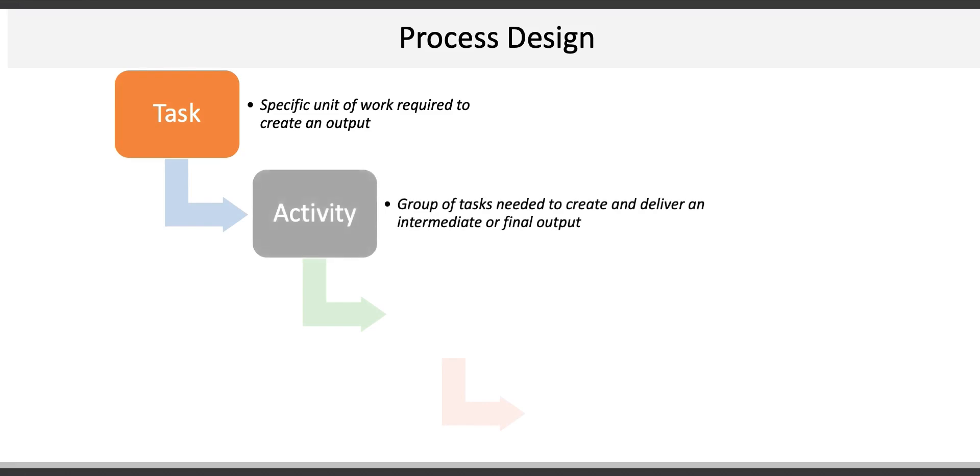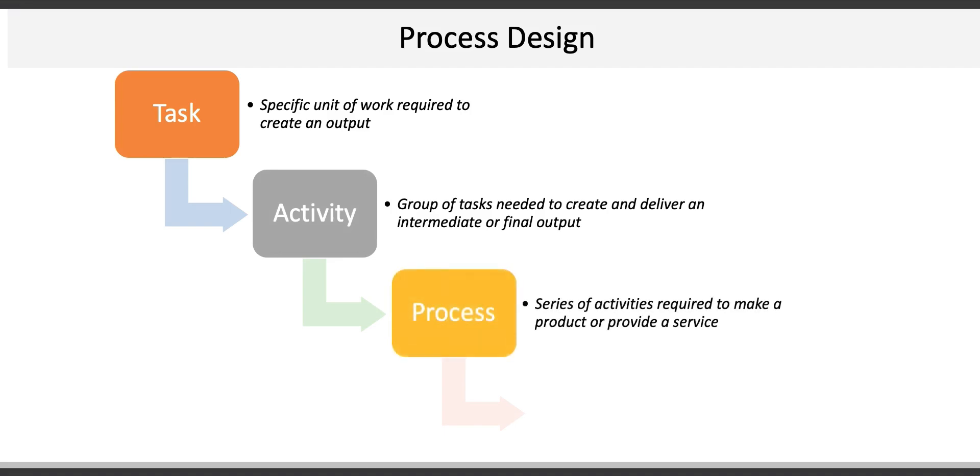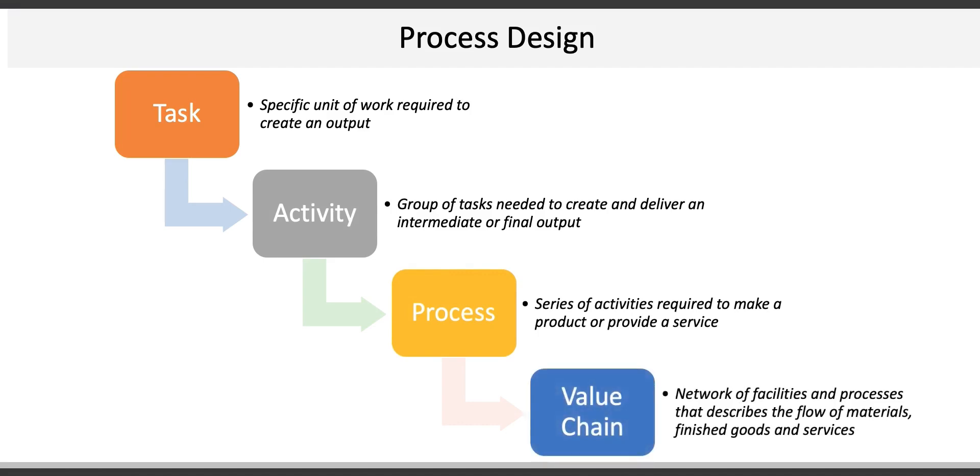The next topic is process design. The goal of process design is to create the right combination of resources to produce and deliver goods and services that satisfy both internal and external customer requirements. Process design can have significant impact on cost, flexibility, and quality. Processes generally consist of four key elements. The first element is a task — specific units of work required to create an output. Groups of tasks needed to create and deliver an intermediate or final output are known as activities. Activities are combined to create a process, and each process has its own value chain or network of facilities and processes that describes the flow of materials, finished goods and services. Part of process design includes process and value stream mapping to visually document the various tasks, activities and processes, and consists of six major activities.